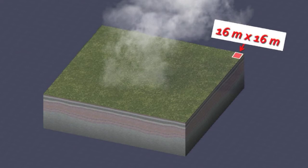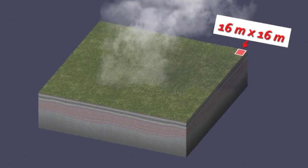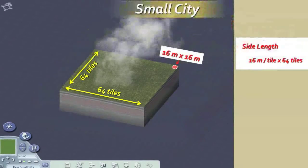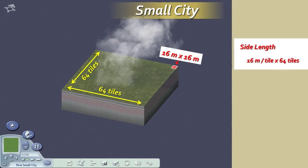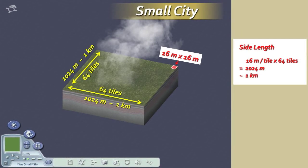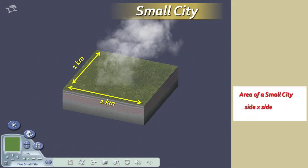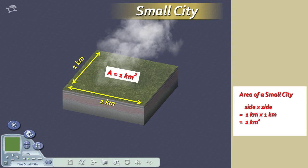The scale of the tile is: one side length equals 16 meters. Knowing the dimensions of one tile along with how many tiles comprise the side of a city, you can compute the dimensions of the city. You can compute the area of the city — just multiply side length times side length. You may notice that the area of your SimCity is actually more comparable to that of a university campus, an amusement park, or a moon colony than an actual city.